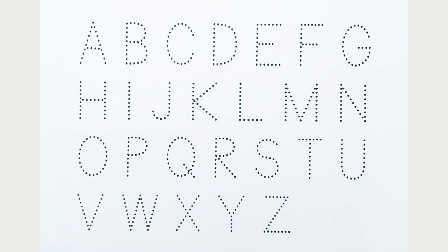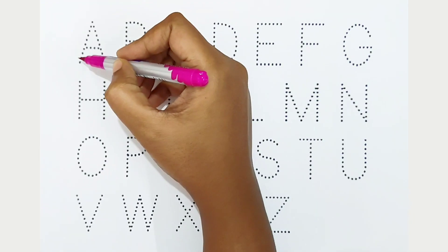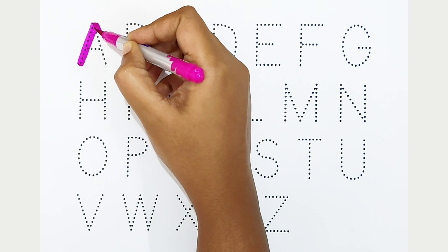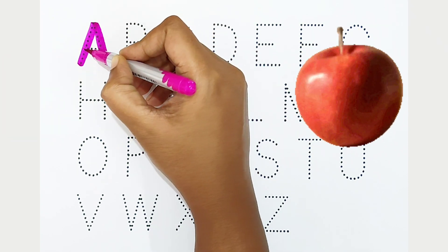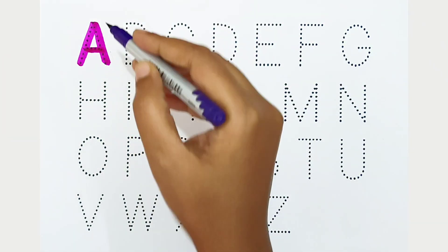We can learn the alphabets from A to Z. Let's begin. A - dark pink color. A is for apple. B - violet color.